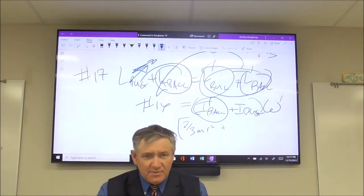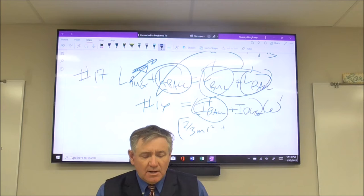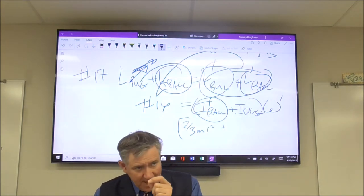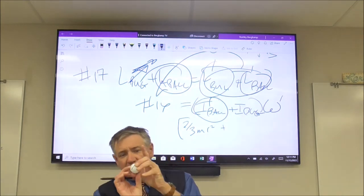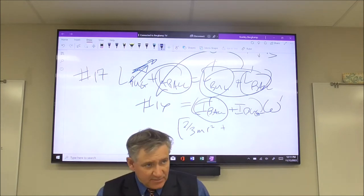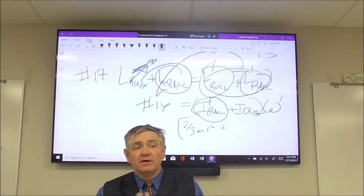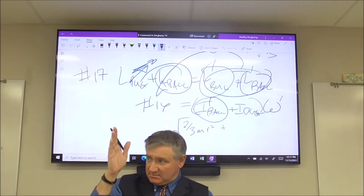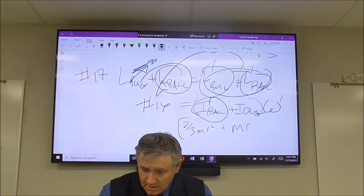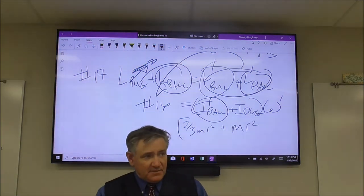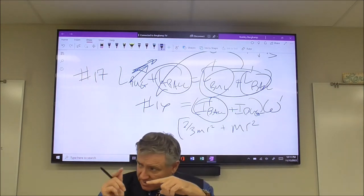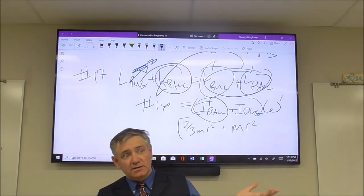The bug is going to be treated as a point mass, because it lands on the ball and spins around with it. So the moment of inertia of the bug is just MR², using the mass of the bug and the outside radius of the ball, because that's where the bug landed.